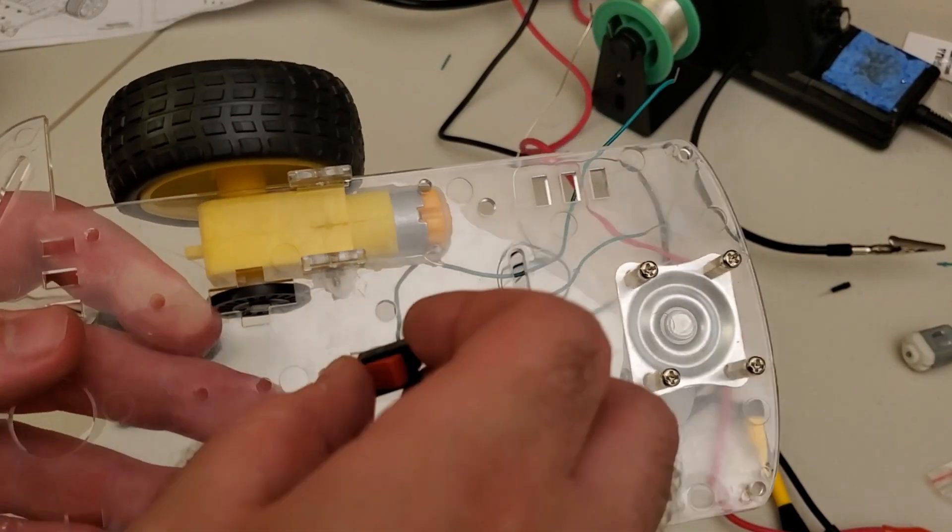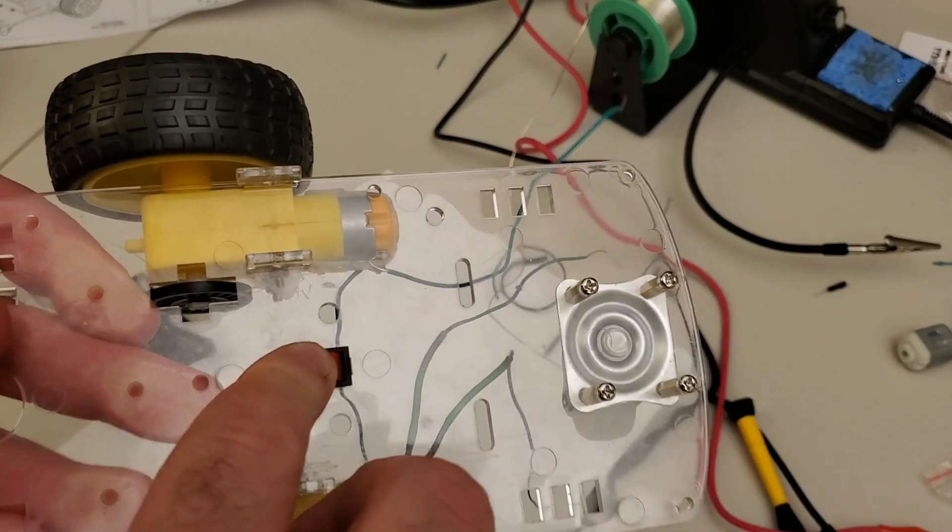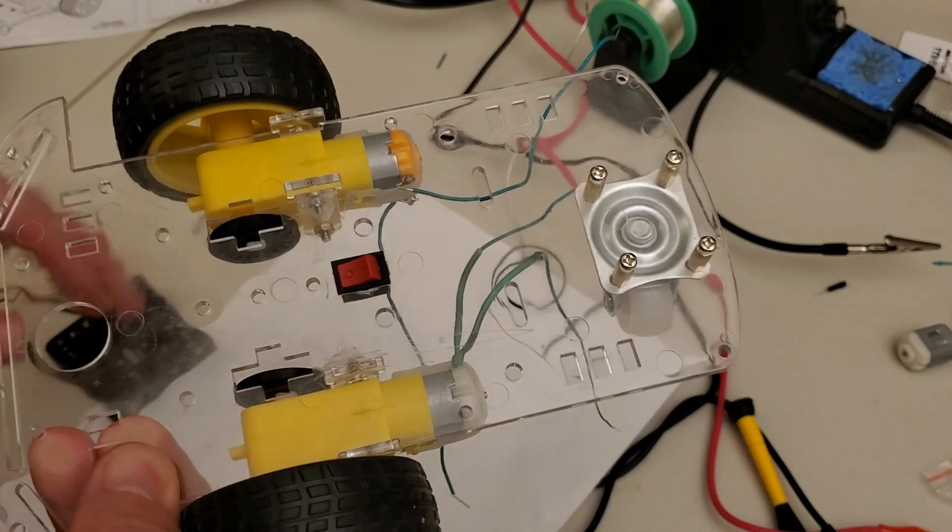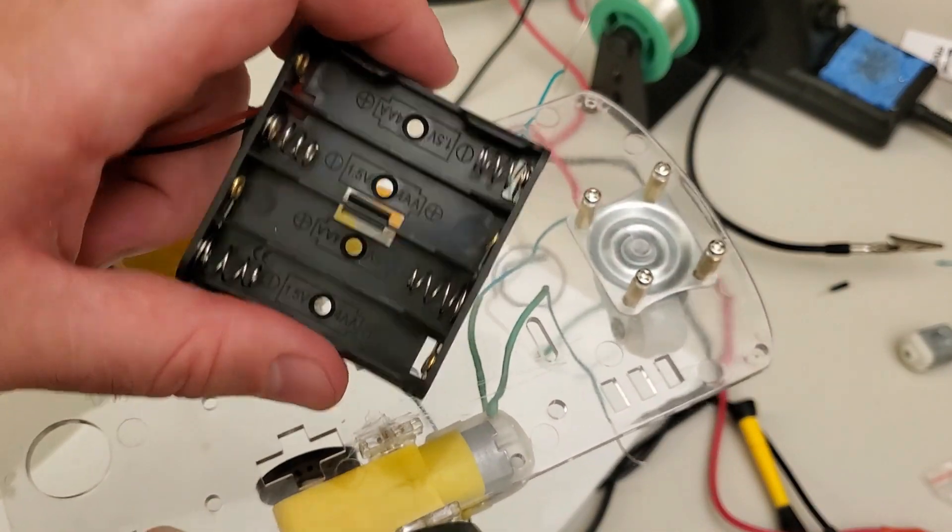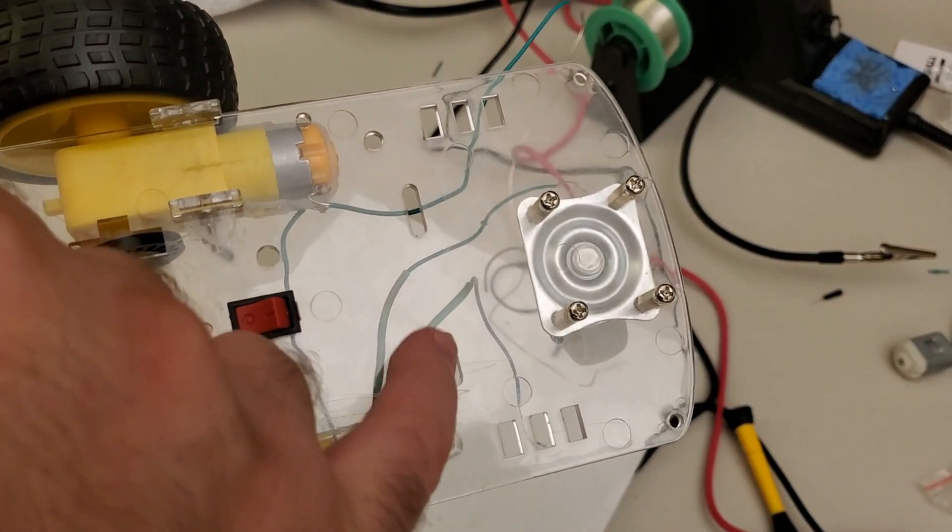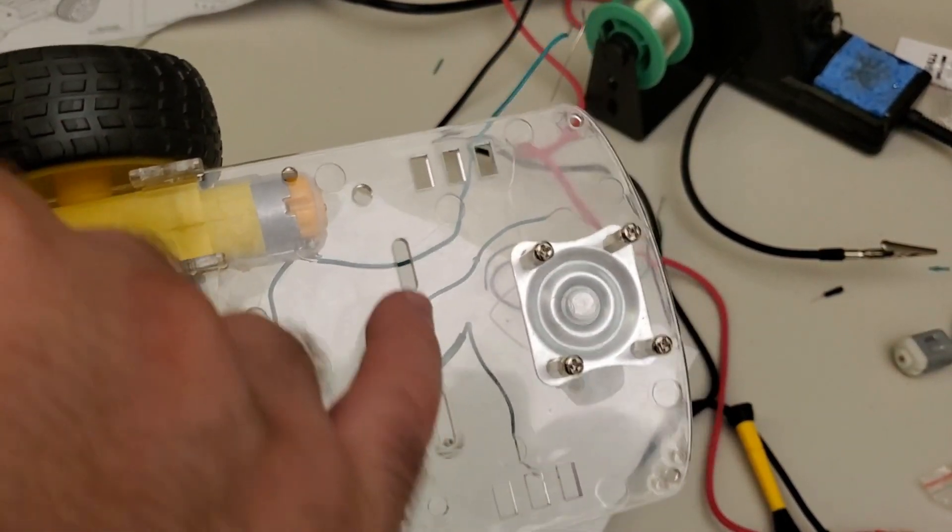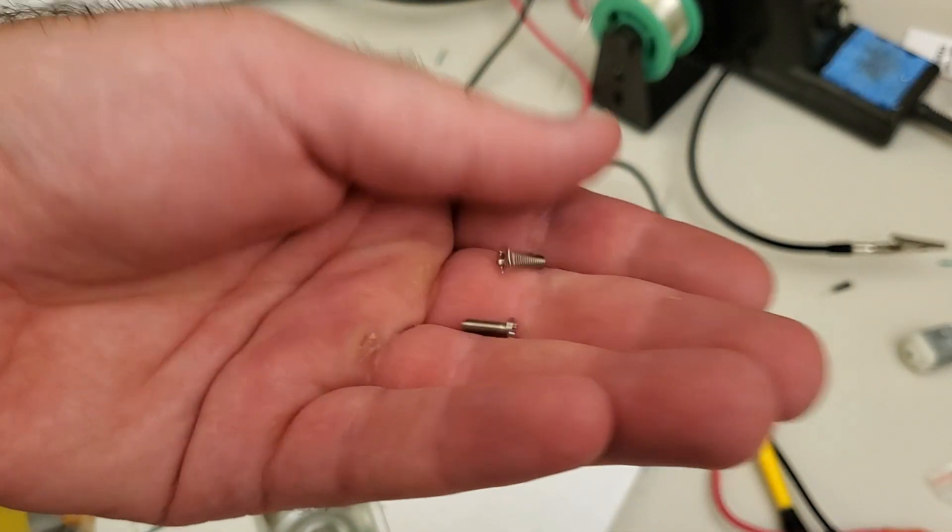Next we mount the on and off switch over here. And the final step is to attach the battery container. Here is the battery container. To attach the battery container we will be using these mounting holes, and we will be using these middle sized screws.